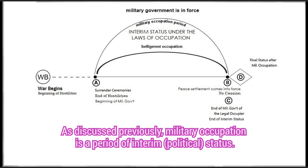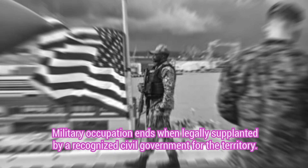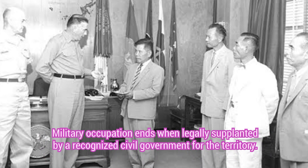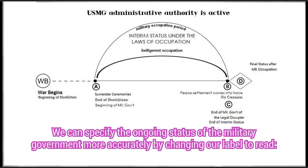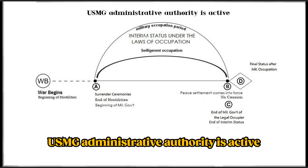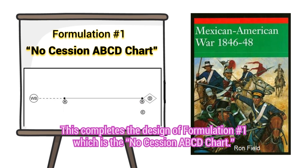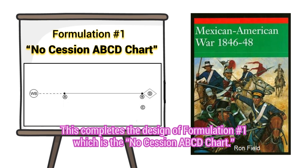As discussed previously, military occupation is a period of interim status. Military occupation ends when legally supplanted by a recognized civil government for the territory. We can specify the ongoing status of the military government more accurately by changing our label to read: USMG Administrative Authority Is Active. This completes the design of Formulation No. 1, which is the No Session ABCD Chart.